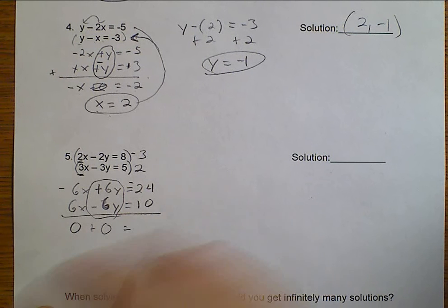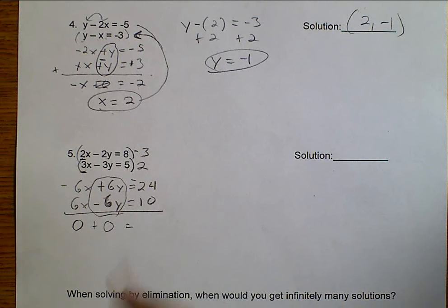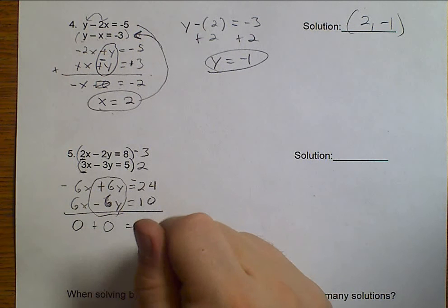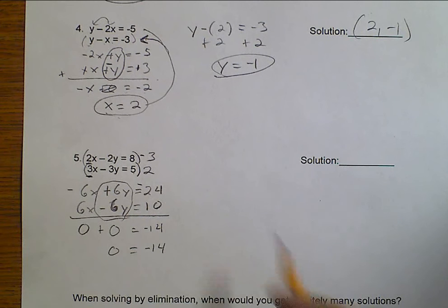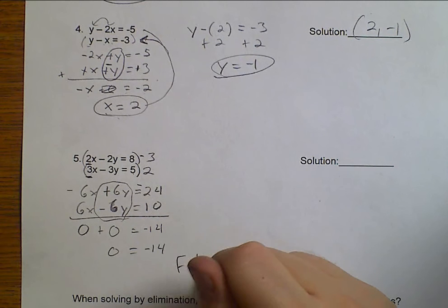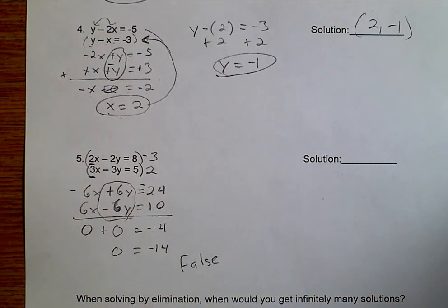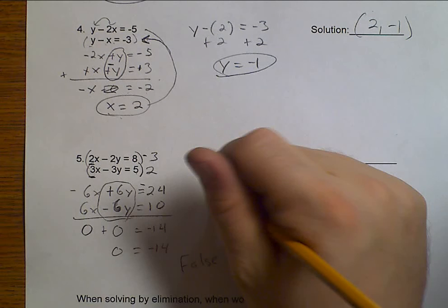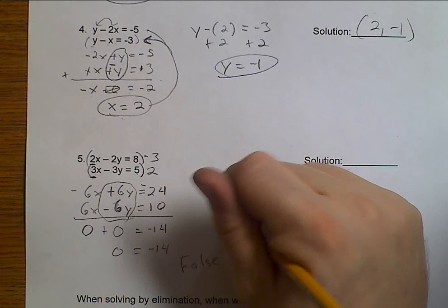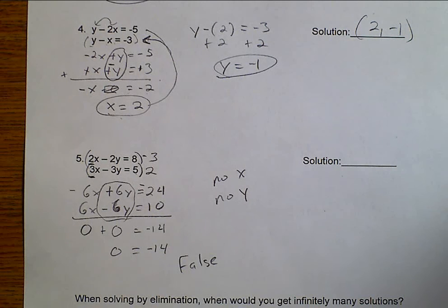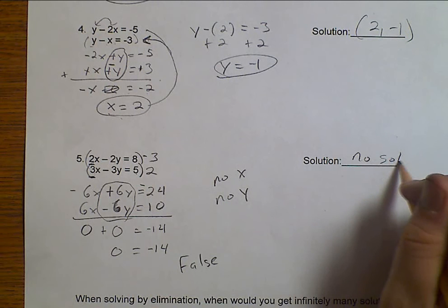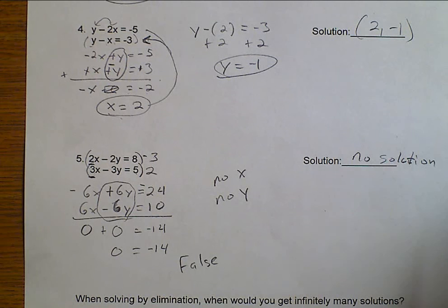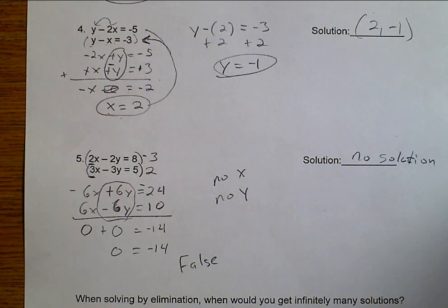Now, I need to make the signs different because these are both minus, so I need to change my sign. I'm going to go ahead and flip all the ones up top. So, minus, plus, and minus. And let's see what we get. Well, negative 6 plus 6 is 0. 6 minus 6 is 0. And negative 24 plus 10 is the same as 24 minus 10, which is negative 14. So, I get that 0 equals negative 14.